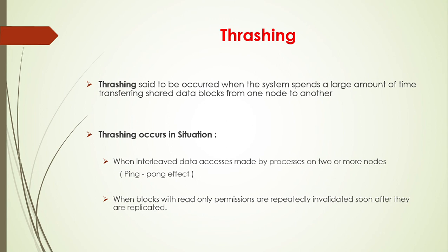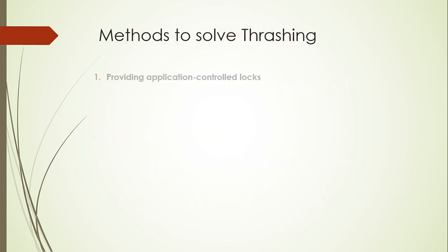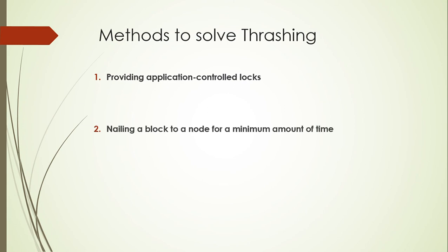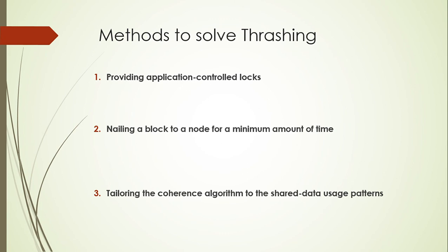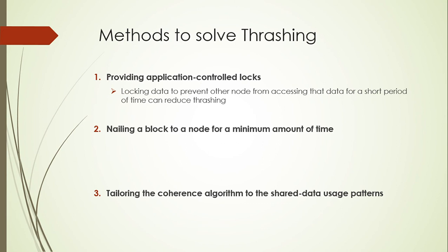There are three methods to overcome thrashing: first, providing application control locks; second, nailing a block to a node for a minimum amount of time; and third, tailoring the coherence algorithm to shared data usage patterns. Providing application control locks means blocking data to prevent other nodes from accessing that data for a short period of time, which can reduce thrashing.